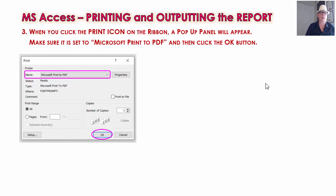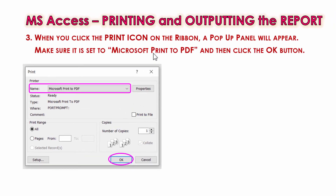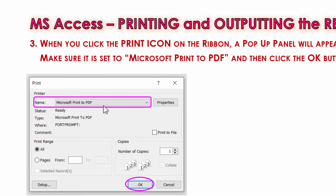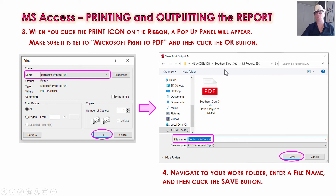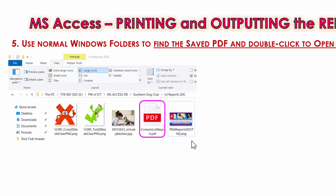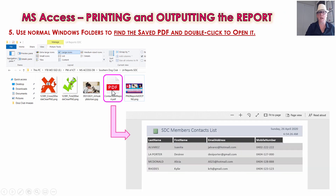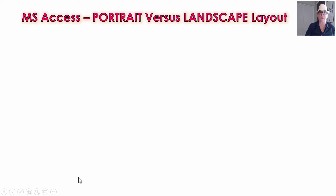Click that Print icon button on the far left-hand side and you'll get a pop-up panel. Make sure it says 'Microsoft Print to PDF' in the Name field. If you've got a printer for paper, click the down arrow and find your printer. We just want to do a PDF so we click OK. Then navigate to where you want to save the PDF — we've gone to our Lesson 4 folders and called it 'Contacts List Report'. Click Save. Then go to your folder and double-click the PDF to open it.